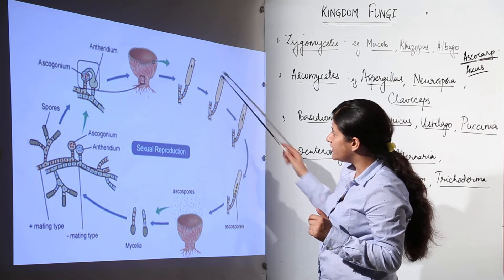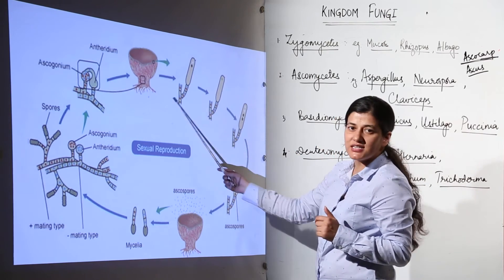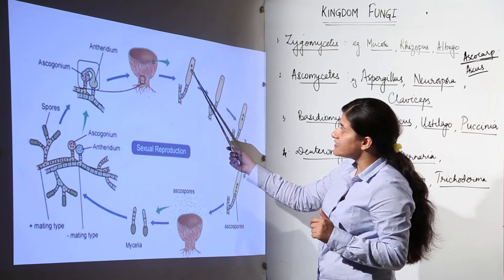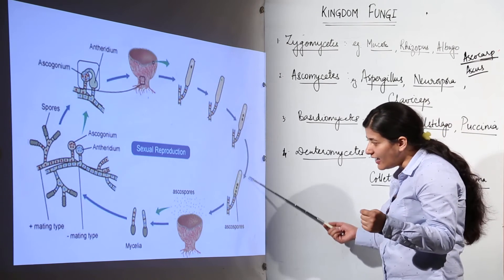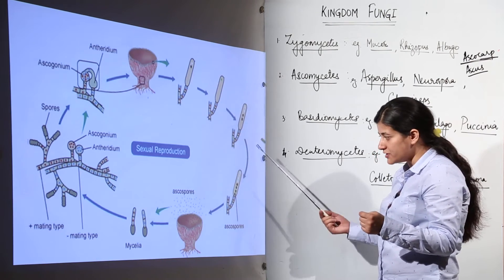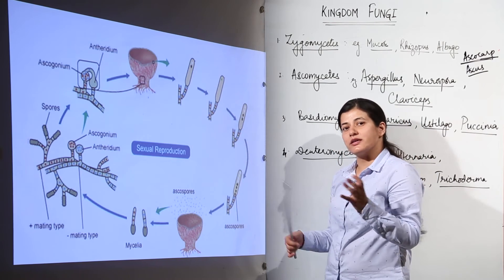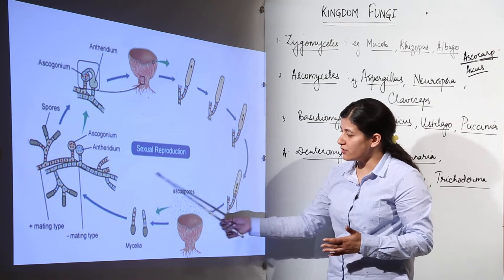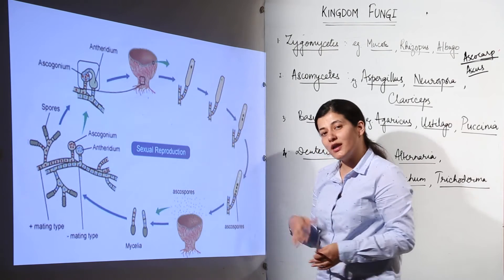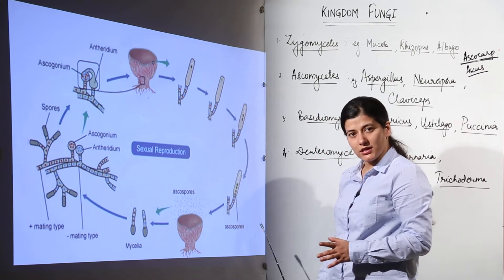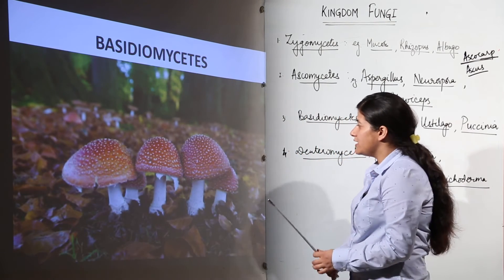Inside the fruiting body you see the ascus — the sacs. A single cell divides into two, then into four, representing meiotic division. After these four cells form, each undergoes mitosis and eight ascospores are formed inside each ascus. The ascospores are released and give rise to new mycelium, which would further act as positive and negative mating types for the next mating cycle.